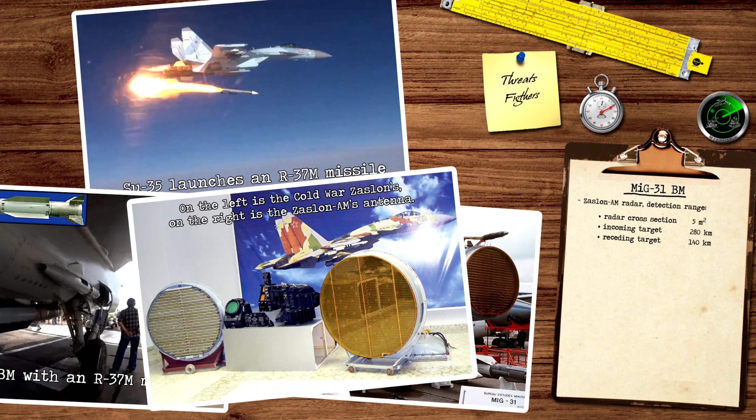The 1.4 meter diameter antenna size and other upgrades provide a 280 km detection range against a 5 square meter radar cross-section incoming target. Against receding targets, the detection range is about half, 140 km. The radar is able to track targets in ground clutter. The radar system is able to track 24 targets, while 6 targets can be engaged at the same time with R-37M and R-77-1 missiles.